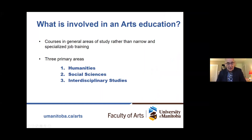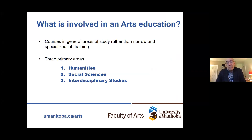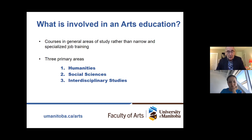So what's involved in an arts education? Well, in your time with us, you'll be taking courses in what are traditionally referred to as the liberal arts. The goals of a liberal arts education are to provide students with an education in the humanities and the social sciences, while at the same time preparing you for a future career. An arts education will help you to broaden your mind. It'll teach you how to gather facts, interpret information, make informed decisions, think critically, and how to learn and assess different viewpoints. Our courses are split into three primary areas: the humanities, the social sciences, and interdisciplinary studies.